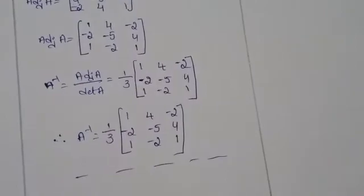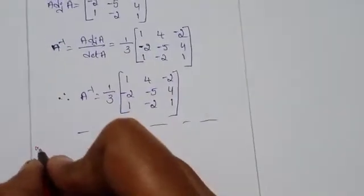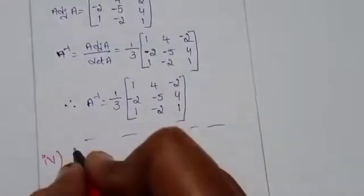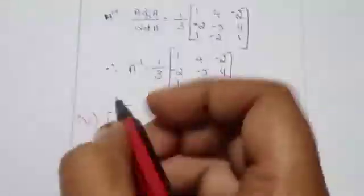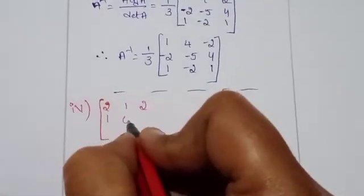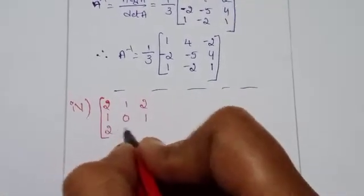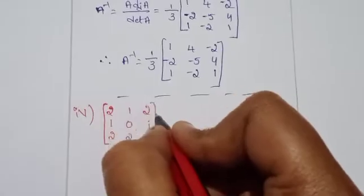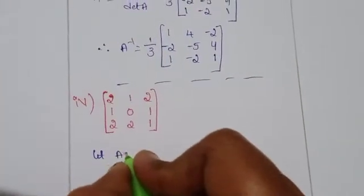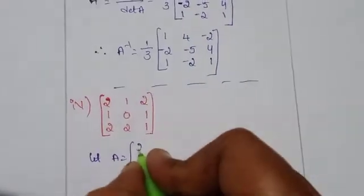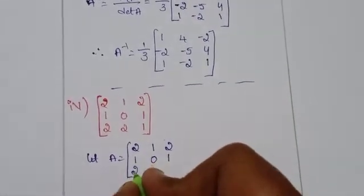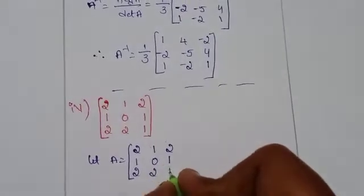Next, the fourth problem. The matrix is: 2, 1, 2, 1, 0, 1, 2, 2, 1. Let A equal to this 3x3 matrix with entries 2, 1, 2 in row 1; 1, 0, 1 in row 2; and 2, 2, 1 in row 3.